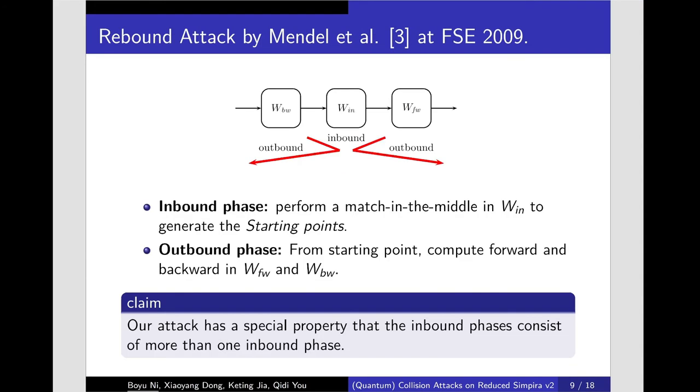The second technique is rebound attack. The rebound attack consists of an inbound phase and an outbound phase as shown in the figure. In the inbound phase, the attacker efficiently fulfills the low probability part in the middle of the differential trail with a meet-in-the-middle technique. The degree of freedom is the number of matched pairs in the inbound phase.